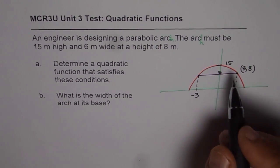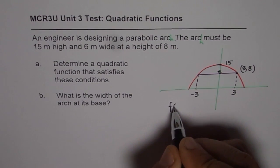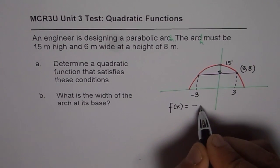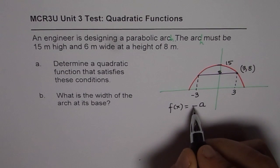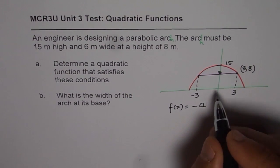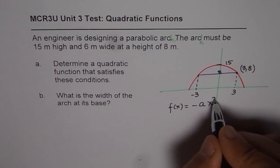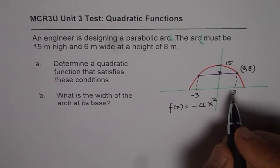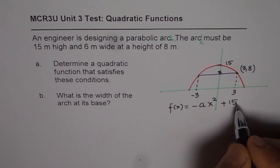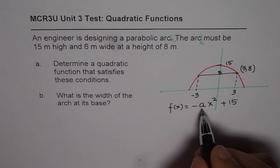So what we can do is begin by writing the quadratic function as f(x) equals. I am taking negative here, since the parabola opens downwards. And x squared, since maximum is 15, plus 15. So that is the equation and we need to find a.